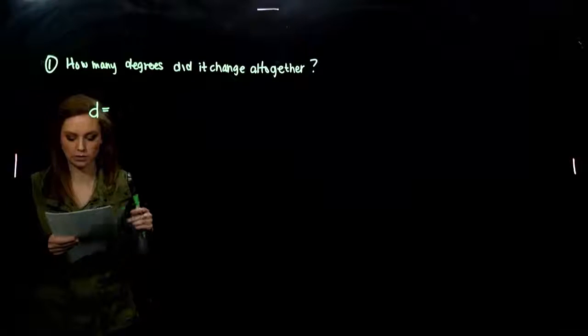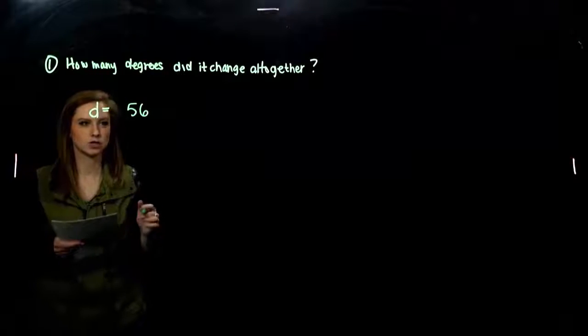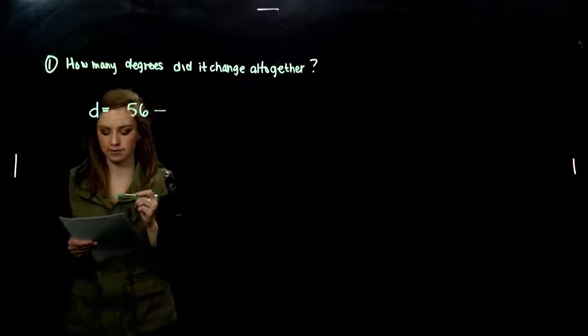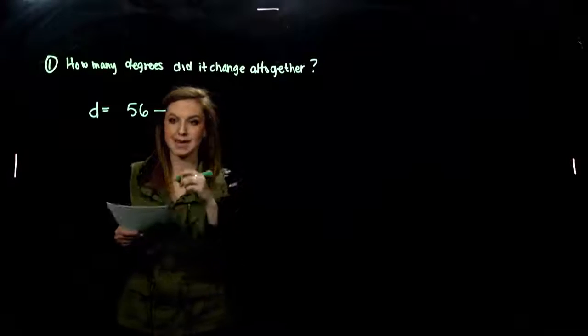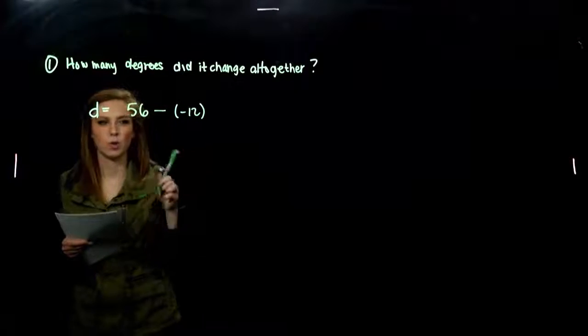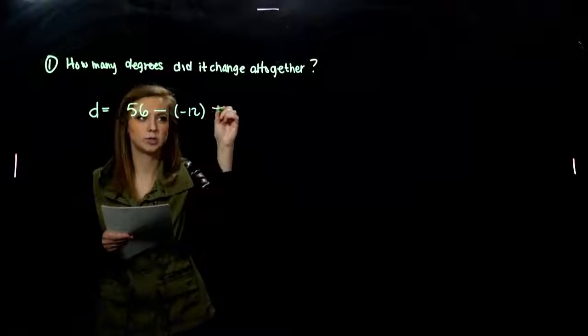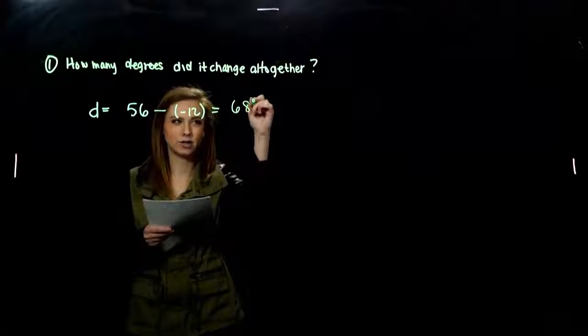So originally, the temperature was at 56 degrees Fahrenheit. And it changed, there was a difference of, temperature had dropped to negative 12 degrees Fahrenheit. So what was our temperature change between those two points in time? We had, altogether, a 68 degree change.